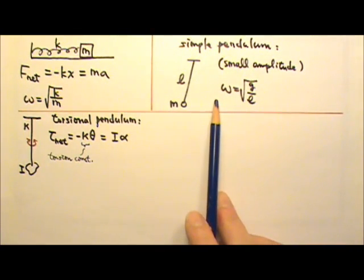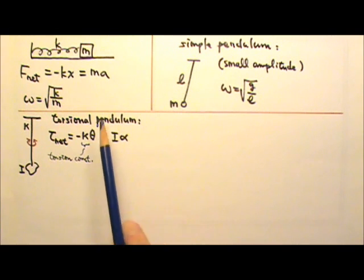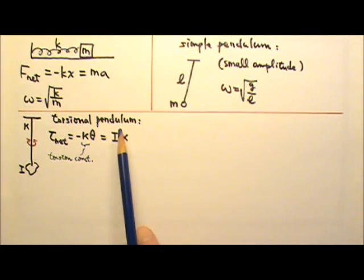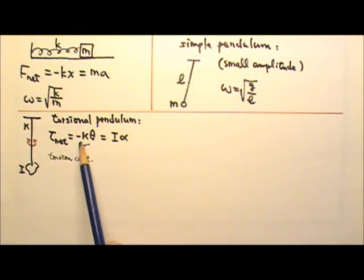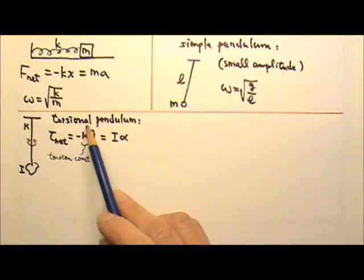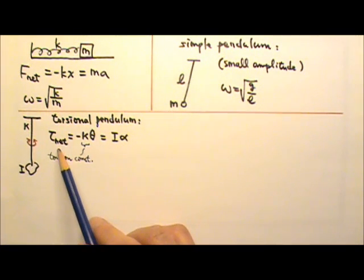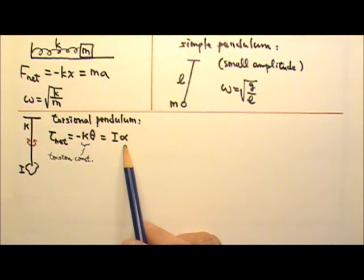Each of these simple harmonic oscillators has its rotational counterpart. The rotational counterpart for the spring mass system is a torsional pendulum. When the wire is twisted, it provides a restoring torque of negative kappa theta, where kappa is called the torsion constant of the wire. If we have to write a differential equation that can be used to solve for theta as a function of time, we would start with the net torque equals negative kappa theta equals I alpha.